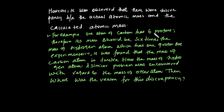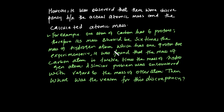For example, one atom of carbon has six protons. Therefore its mass should be six times the mass of a hydrogen atom, which has one proton. But experimentally, it was found that the mass of a carbon atom is twelve times the mass of a hydrogen atom — the actual atomic mass, not the calculated atomic mass.